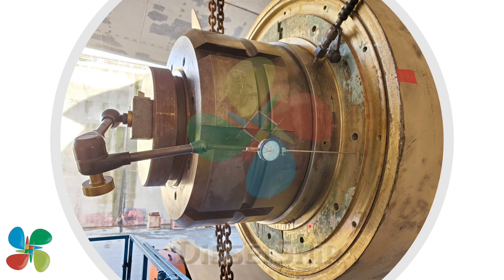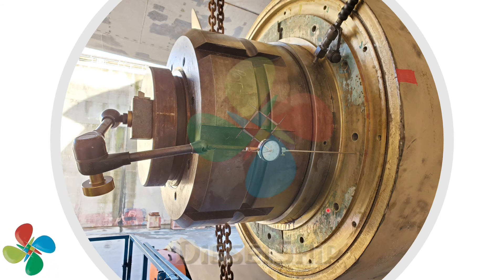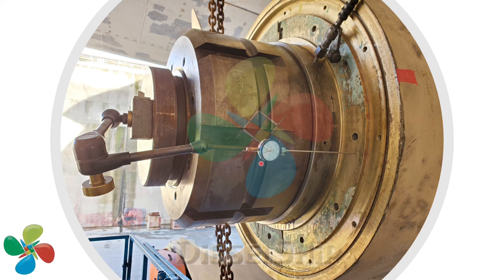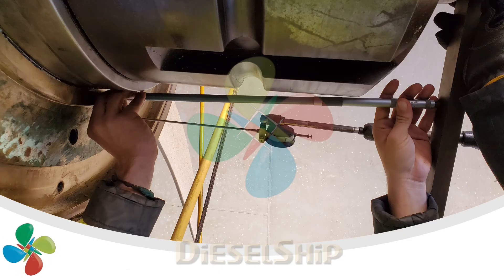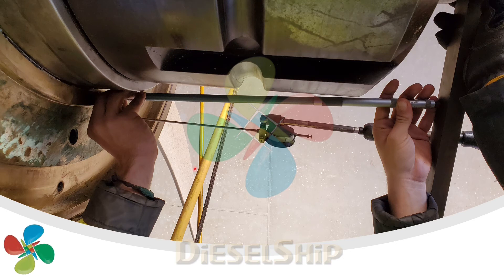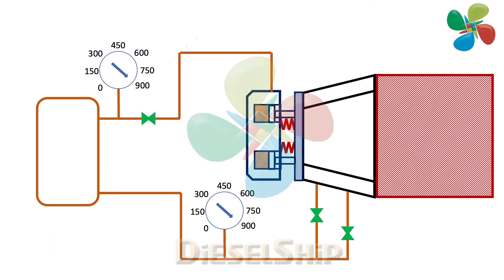Now the propeller is pushed against the taper towards the shaft. A dial gauge fitted prior to starting the operation shows how much the propeller has moved, and this is compared with the measurement prescribed in the propeller manual. Another way of verifying is with an inside micrometer, measuring the same distance and checking it against the values given in the manuals.